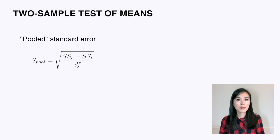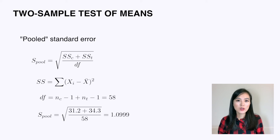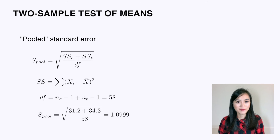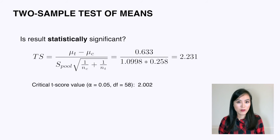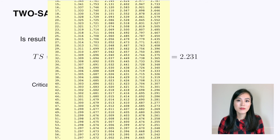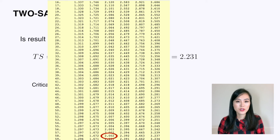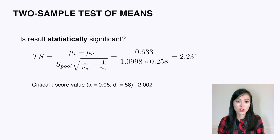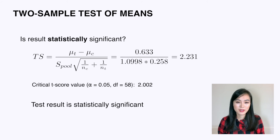Here we introduce two more parameters: sum of squares (SS) and degrees of freedom (df). I won't go through in detail how to derive the pooled standard error, but all the numbers are shown — feel free to pause the video to verify your calculation. With the pooled standard error, we compare the test statistic with the critical t-score at a 95% confidence level for 58 degrees of freedom, which is 2.002. The test statistic is larger than 2.002, so the result is statistically significant.